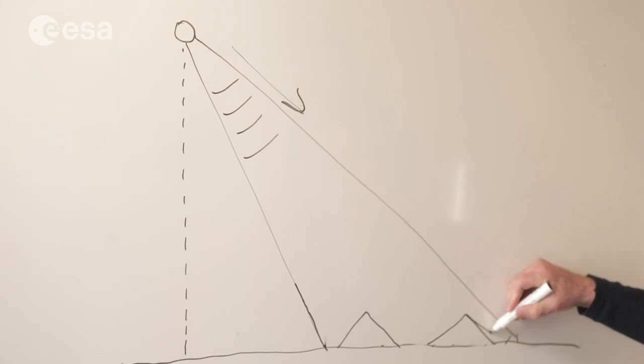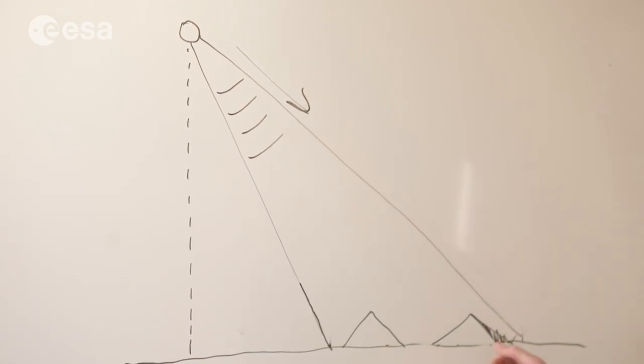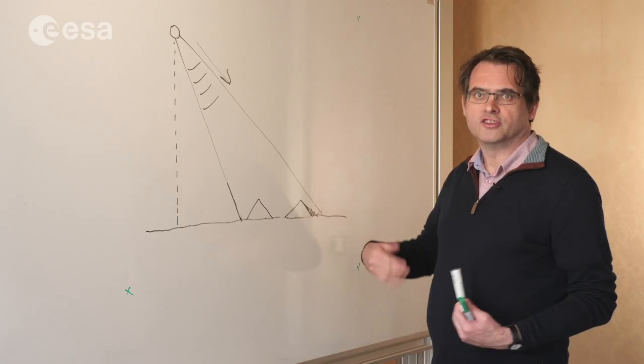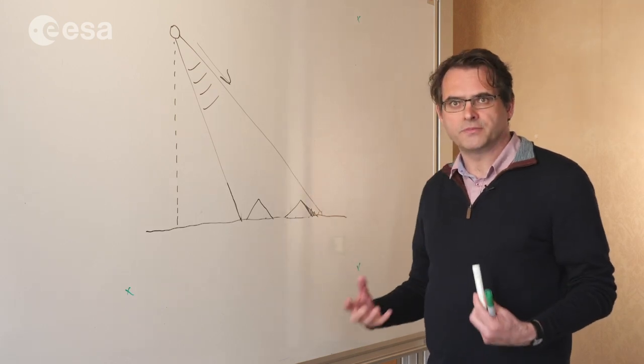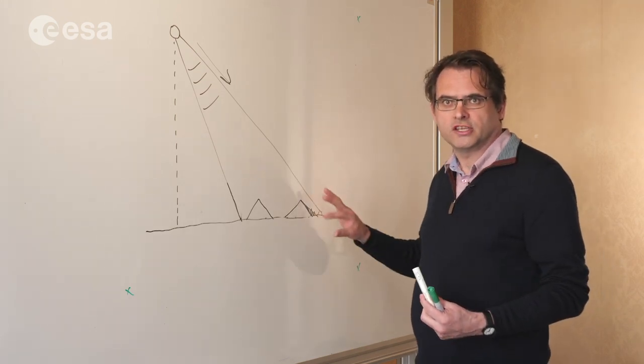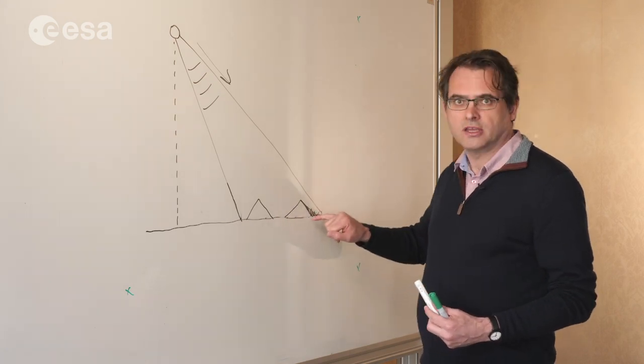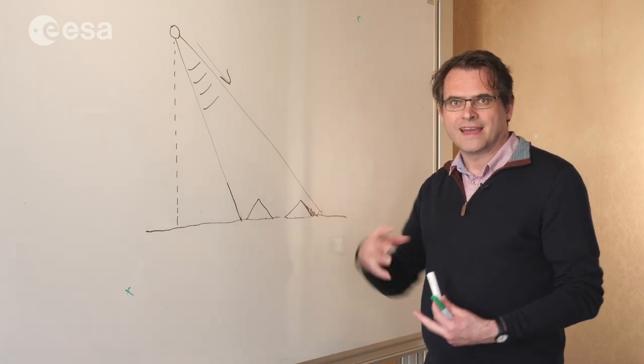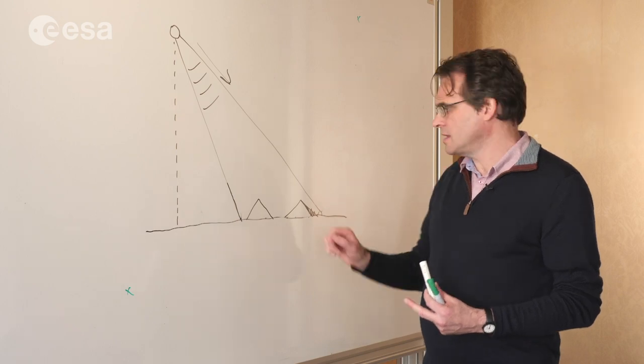The first is that some parts of the signal are not returned. Those parts that are obscured by the topography mean that there is no signal. This is what we call radar shadow. It's different from optical shadow because it's not just poorly illuminated. There is absolutely no signal coming back from the region behind the objects. It's obscured, so there is no echo and it's complete radar silence in those parts of the image.